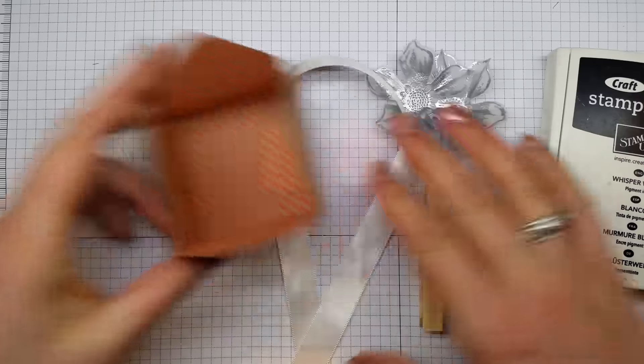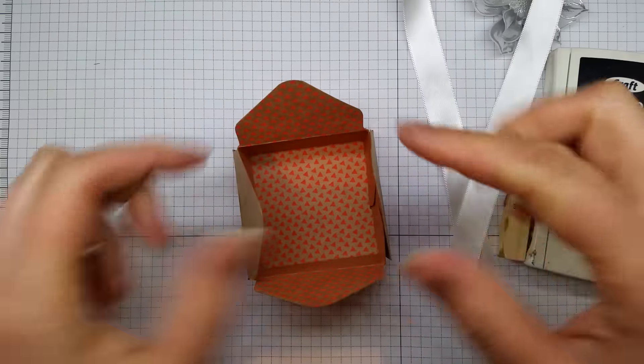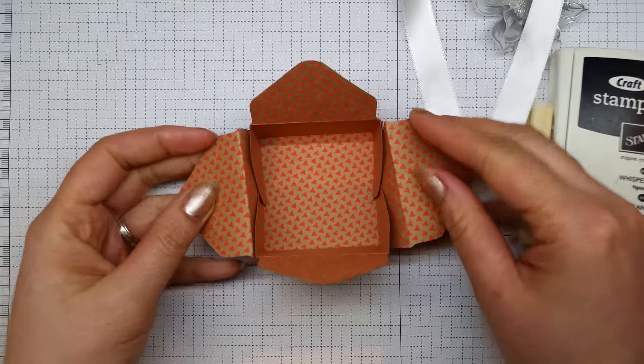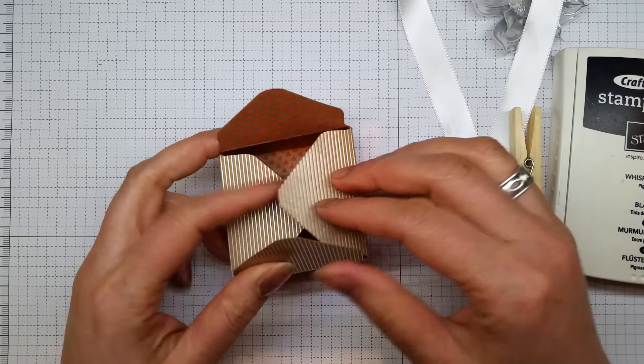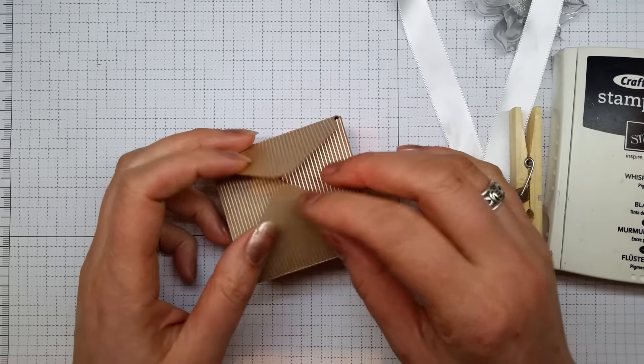That gives you a really nice box shape—you just fold it up and glue it. There are lots of videos on YouTube if you need to know a bit more about how to do that.